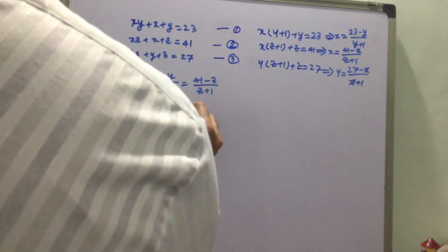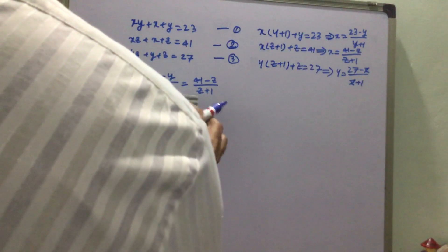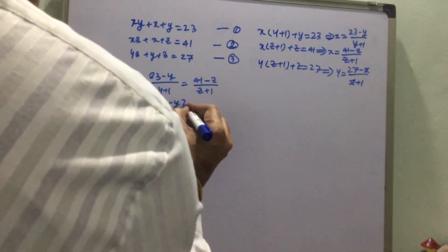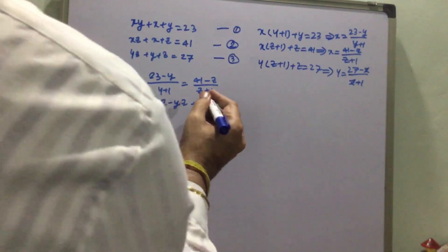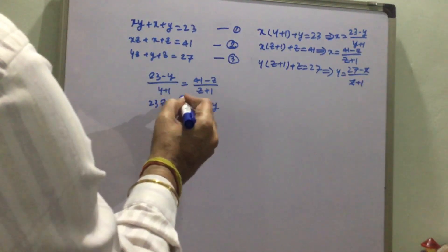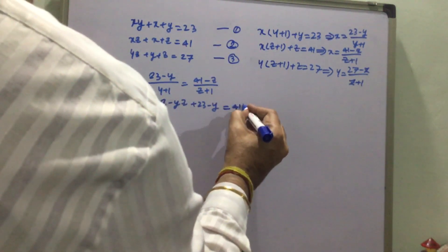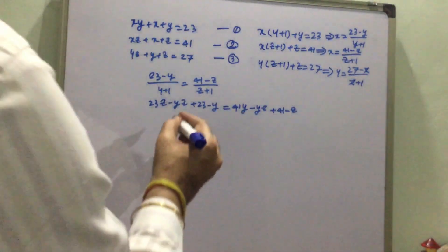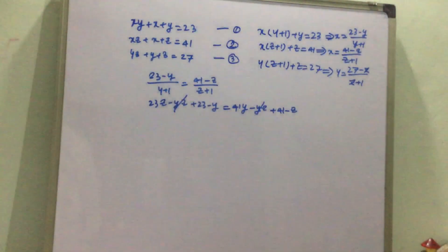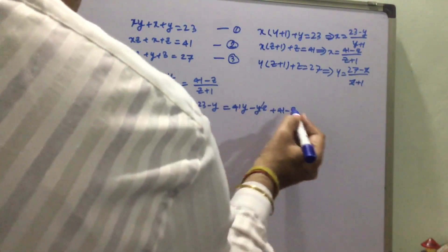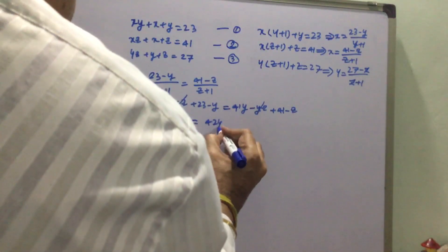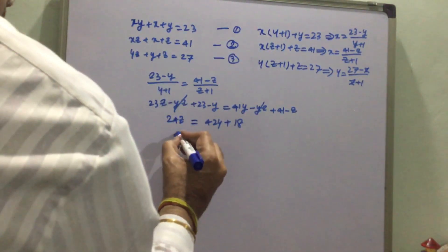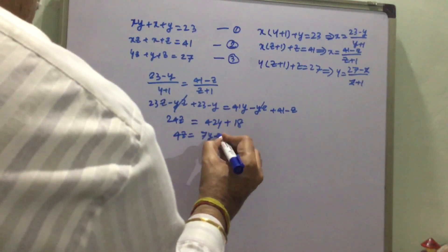After cross-multiplying and expanding, we get 23 - 23z - yz + 23 - y = yz + 41y + 41 - 23. Simplifying and collecting terms, this reduces to 4z = 7y + 3.